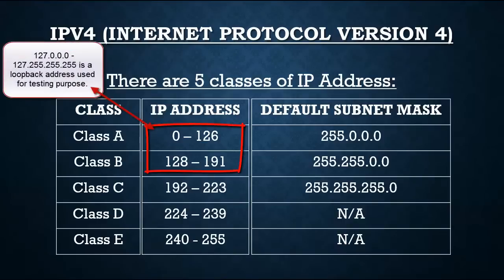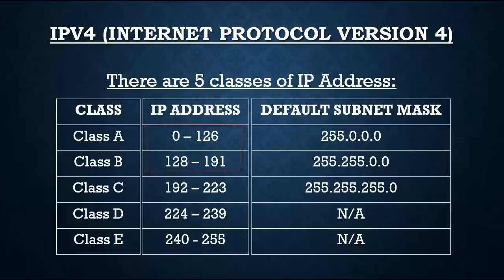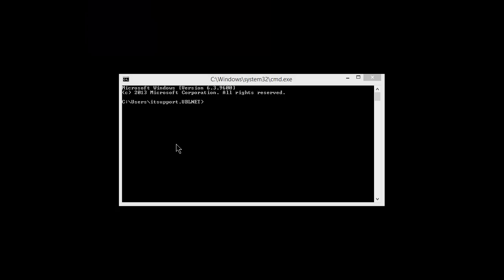You will notice that the IP address with number 127 is not available in the classes, because it is a loopback address. It is used to identify whether your NIC card — that is, Network Interface Card — is working or not. I will show you how to test your NIC card using this loopback address 127.